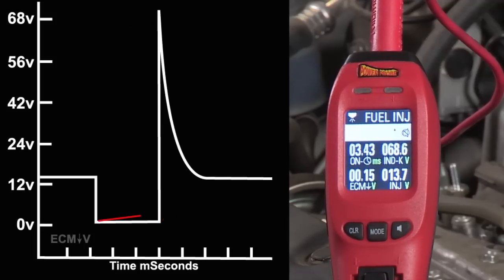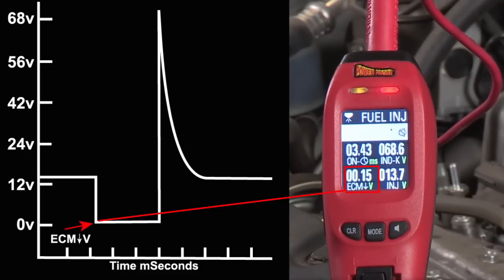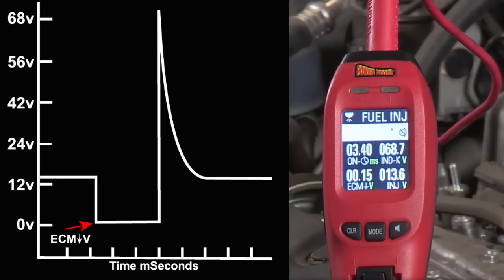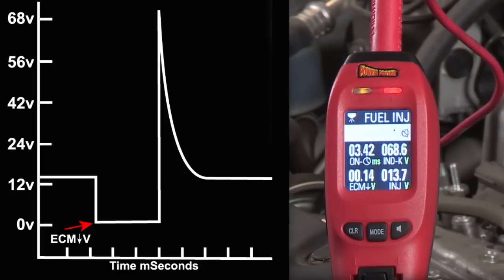Three, ECM ground voltage. This is the voltage drop when the ECM grounds the injector. This should be near zero volts, but can be as high as a half a volt due to the internal resistance of certain switching transistors in ECMs.